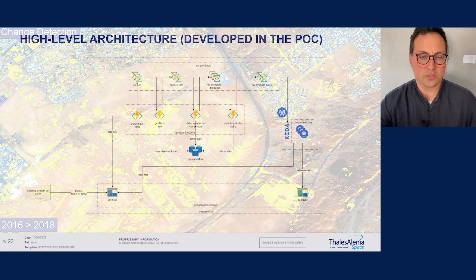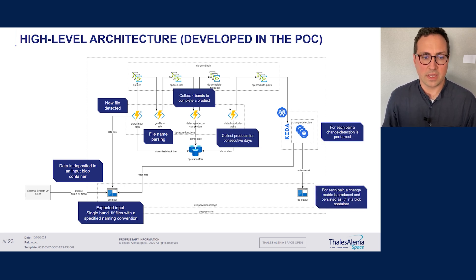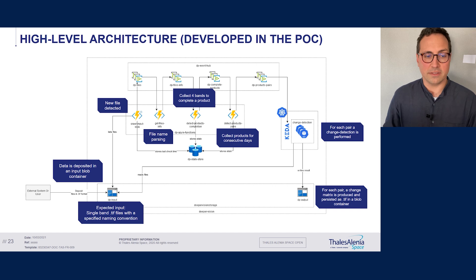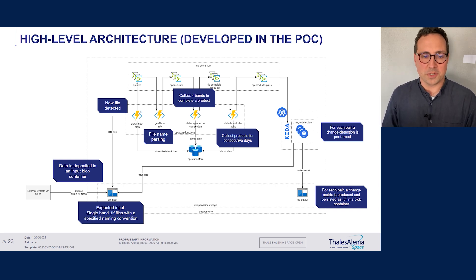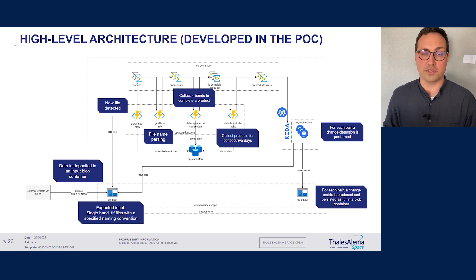Here is what the change detection algorithm highlights — everything that has changed. This is the architecture of the change detection pipeline on Microsoft Azure. It was deployed to use Microsoft Azure functionalities such as blob containers, Azure Functions, and Azure Kubernetes Services. Image data arrives in the blob container and Azure Functions collect information about location and date from image metadata. It results in a queue containing the image pairs to be compared. For each pair, a change map is computed with Deeper Vision's change detection algorithm using the Kubernetes service, and the output is sent to another blob container. Deeper Vision will soon be available on the Microsoft Azure Marketplace.